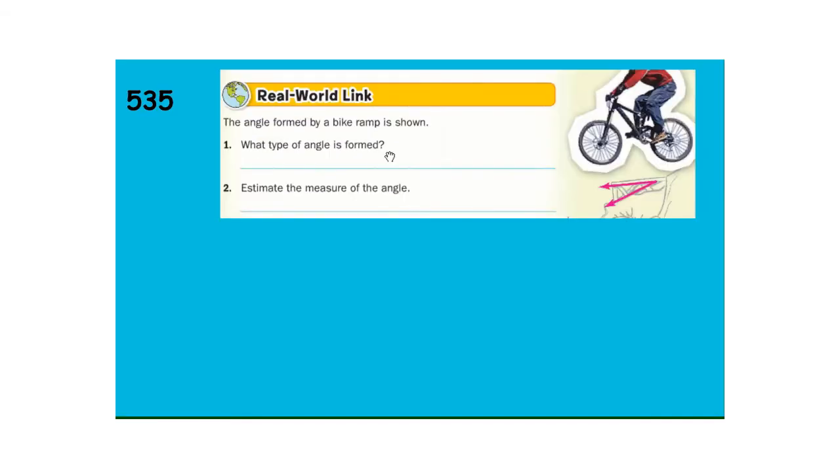Then at the bottom of the page, the angle formed from the bike ramp. What type of an angle is that? Acute, obtuse, right, or straight. And estimate the measure. So that's just a guess. So pause the video and put those two answers in. Then, so the angle would be acute. Estimate the measure would probably be around 20 to 25 degrees, is what I would say.